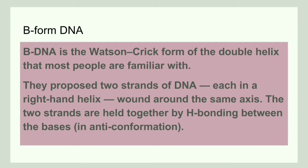The most common form of DNA is B-form, proposed by Watson and Crick, and hence it is often known as the Watson and Crick form of DNA. It is a double helical form — they proposed that two strands of DNA, each in a right-handed helix, are wound around the same axis and held together by hydrogen bonding between the bases. Each strand of DNA is a right-handed helix.